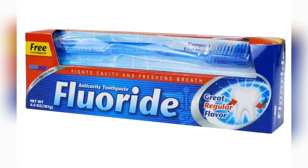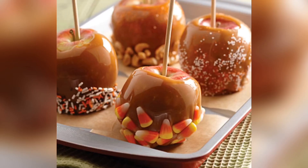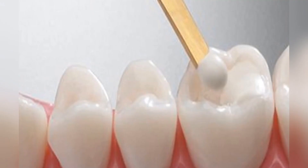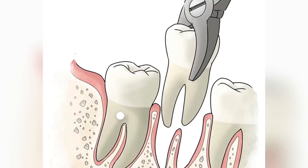Preventative measures are to brush your teeth twice per day, especially at night, using a fluoride toothpaste, to avoid sweet and sticky food, and to avoid tobacco smoking as well as alcohol use. For treatment, these include dental filling as well as dental extraction in more severe cases. Remember to consult with your dentist and get those dental checkups.